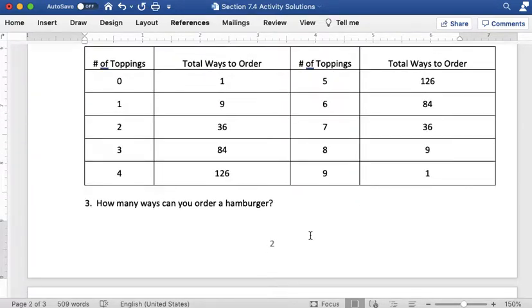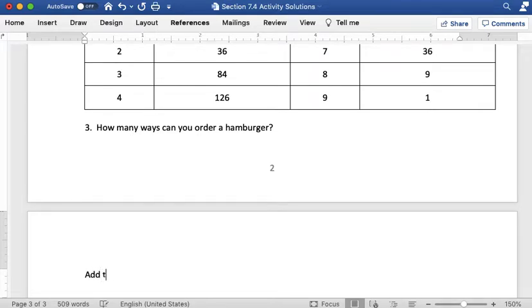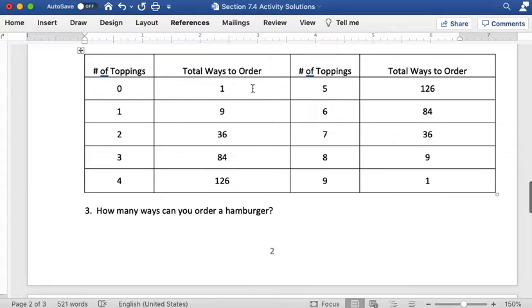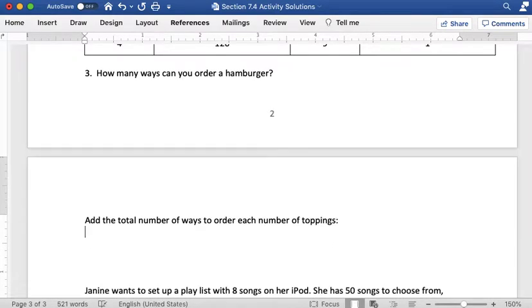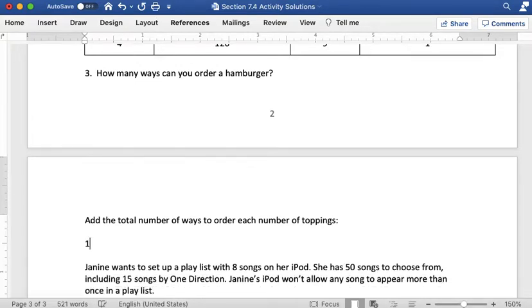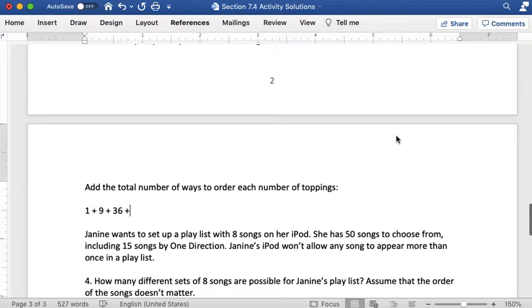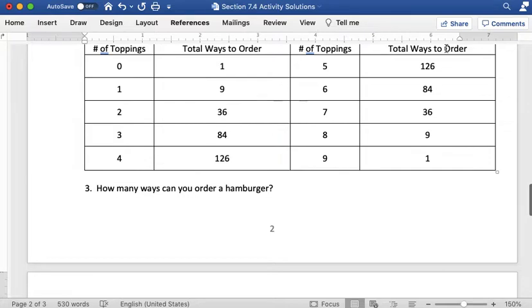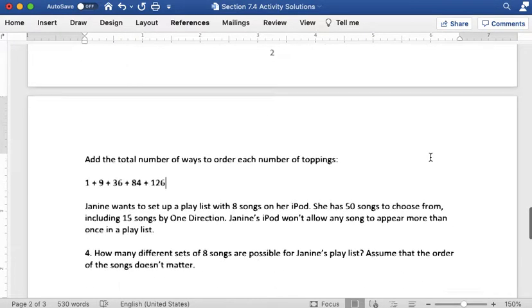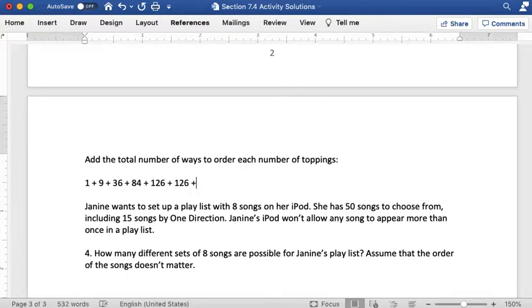So to find how many ways you can order a hamburger, I'm going to add the total number of ways to order each number of toppings. So it would be total number of ways to order 0 topping, 1 topping, 2 toppings, etc. So I'm going to add all these 10 numbers up. That's going to be 1 plus 9 plus 36 plus 84 plus 126. Now since this is symmetric, I can just take this sum and multiply it by 2 because it's the same 5 numbers on this side. Or I can just keep adding that works too, however you want to do it.